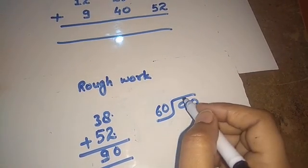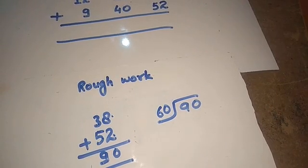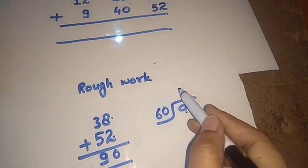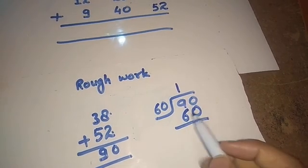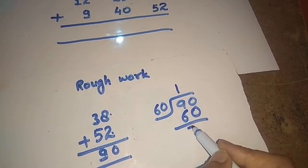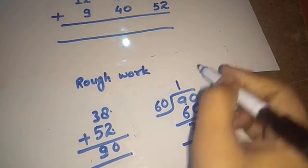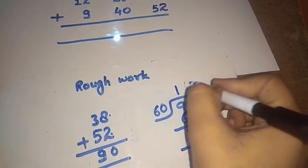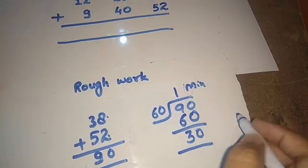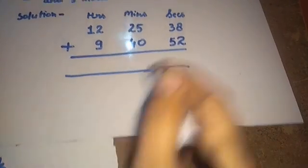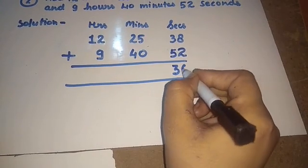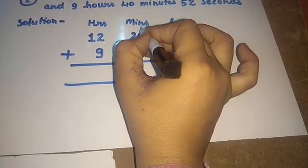90 divided by 60: 60 into 90 goes 1 time with remainder 30. So the answer is 1 minute and 30 seconds. In the seconds column we write 30, and 1 is our carry.